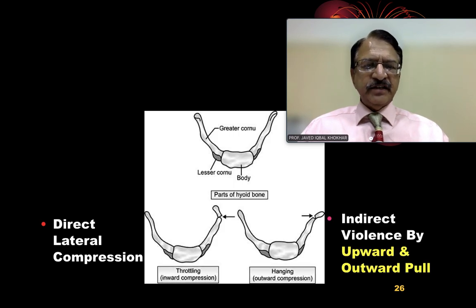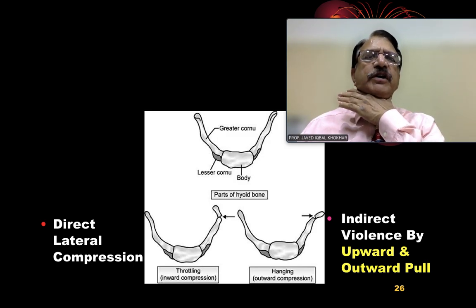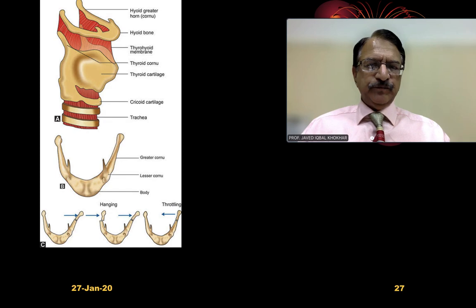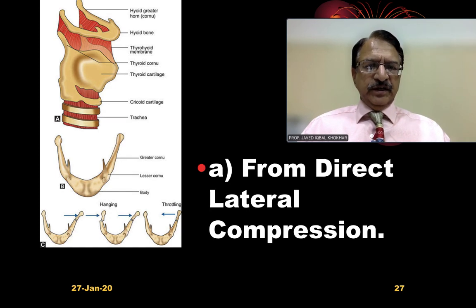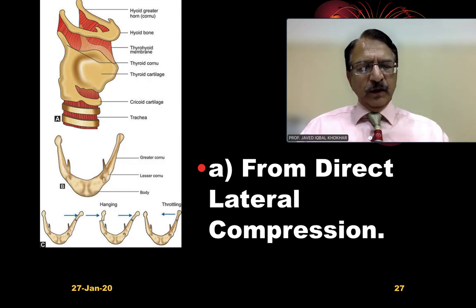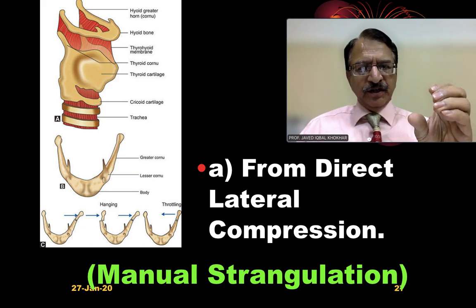The other mechanism is indirect violence by upward and outward pull, and this will cause the hyoid bone fracture segment to displace outward. Direct lateral compression will cause the fracture segment to move inward, and this happens in manual strangulation.